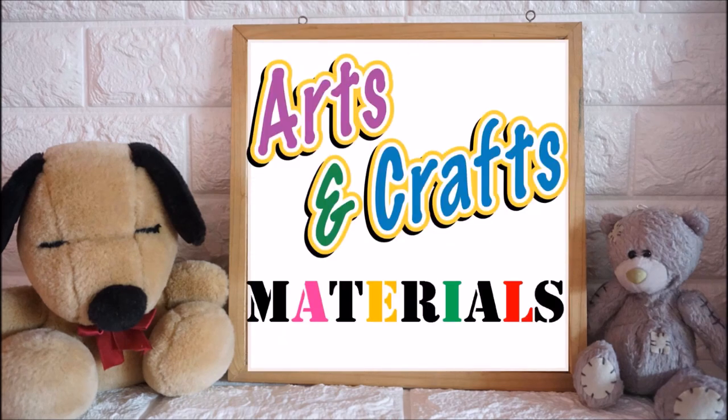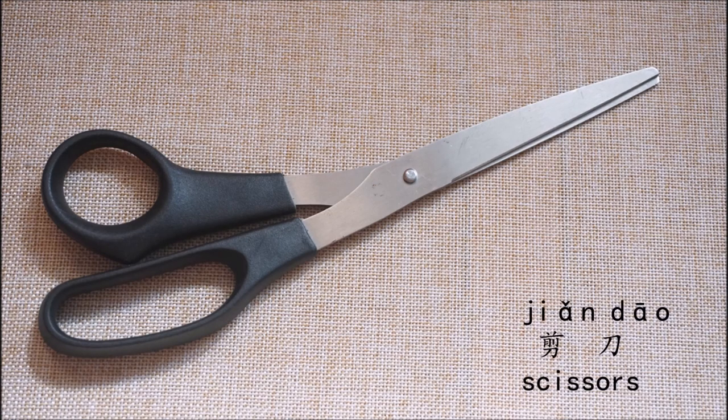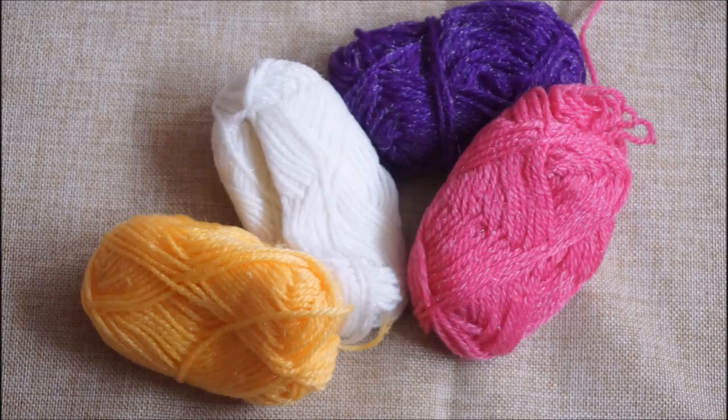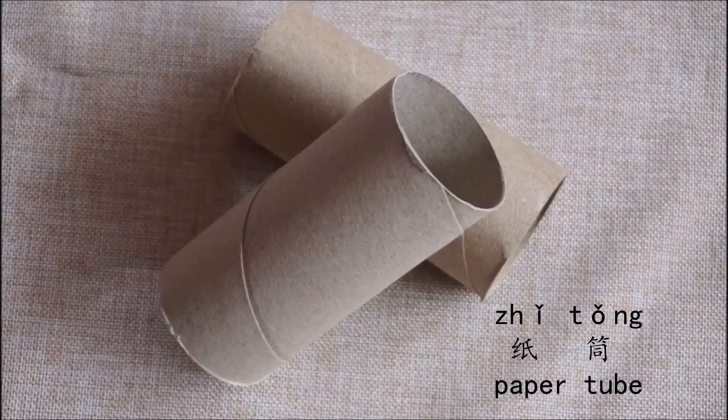These are the materials that we're going to use for our arts and craft activity. This is 剪刀 (scissors). This is 毛线 (yarn). This is 纸筒 (paper tube).